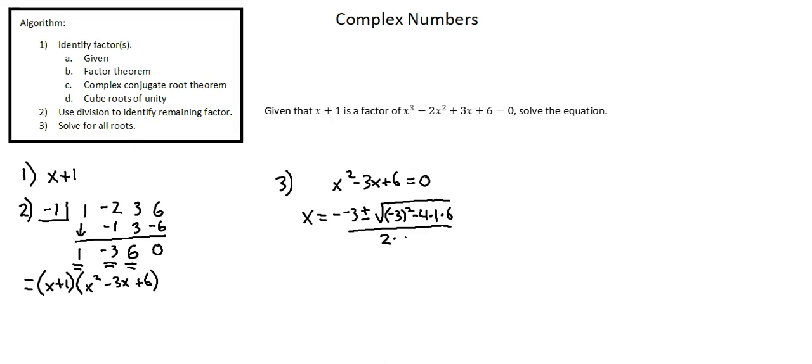the constant is 6, all over 2 times a, the coefficient of x squared, which is 1. We can simplify to 3 plus or minus the square root of negative 15 over 2 times 1 is 2,